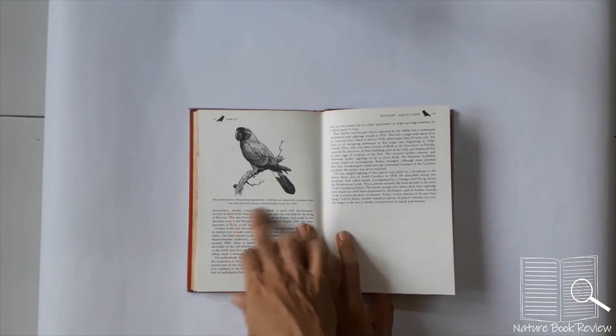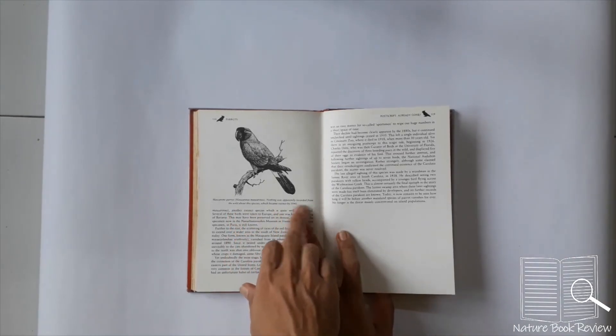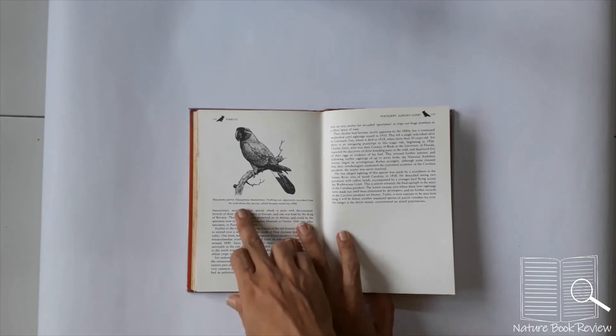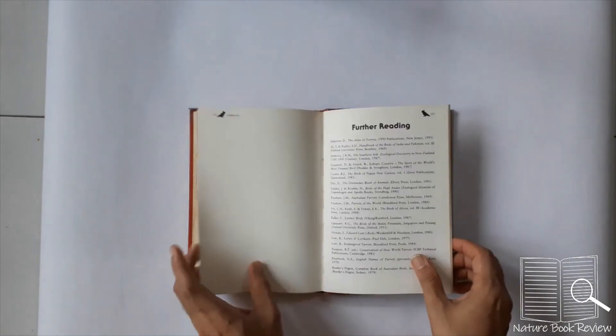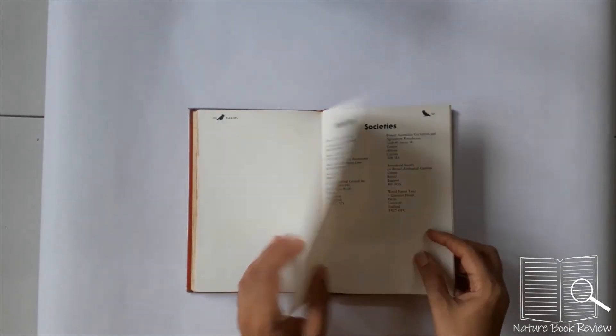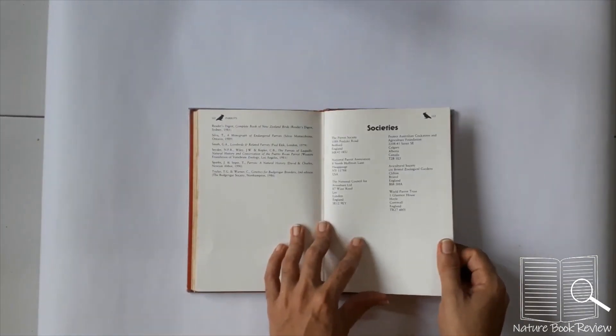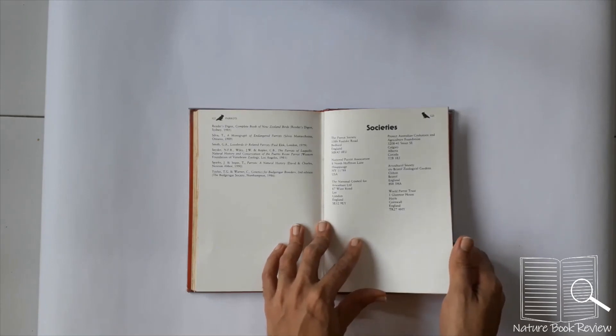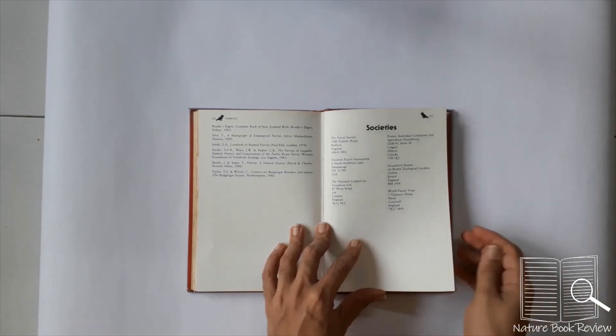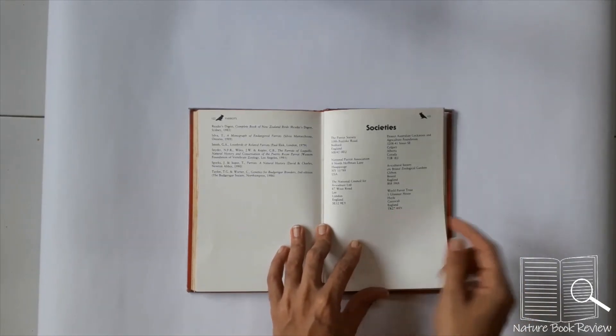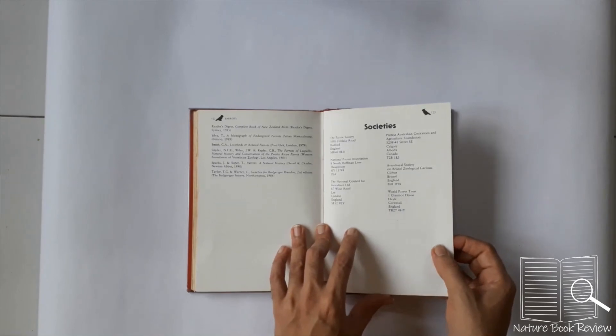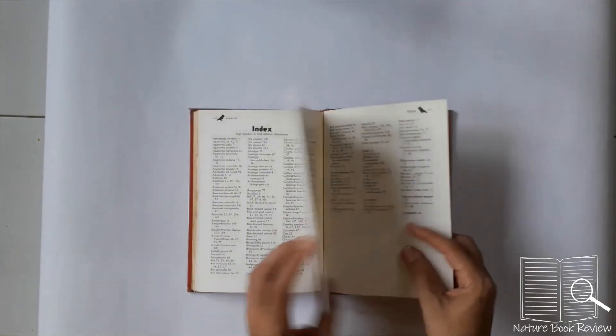Mascarin parrot. Nothing was apparently recorded from the wild about this species which became extinct by 1840. So long ago. And there is further reading. And there are different societies related to parrots. Basically they are about the breeders, aviculturists. I don't think there is a society related to conservation. Then of course index.